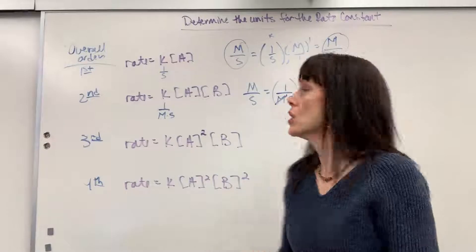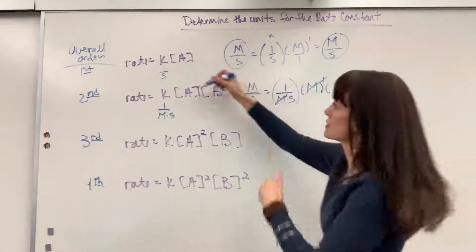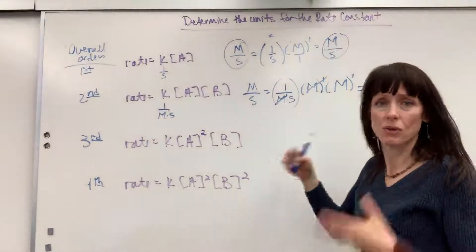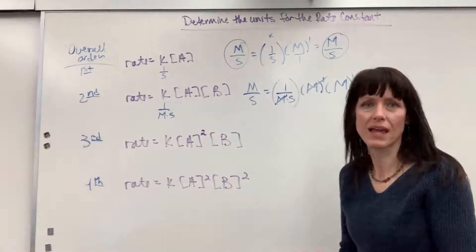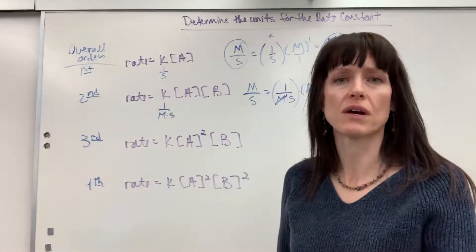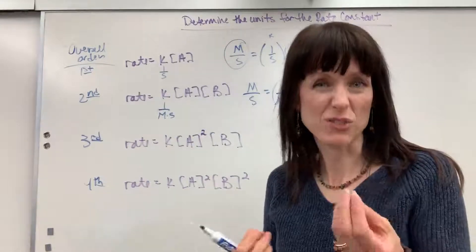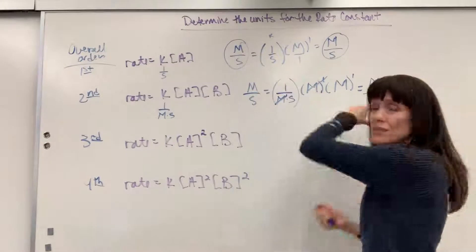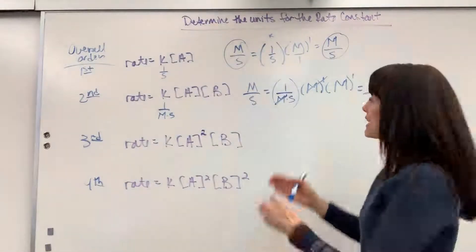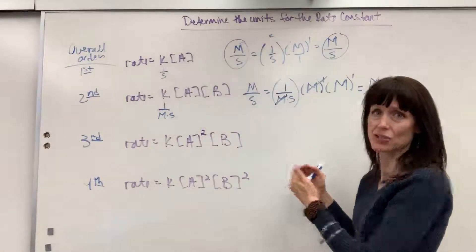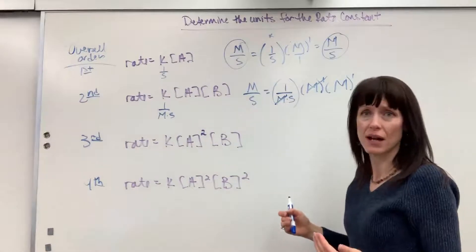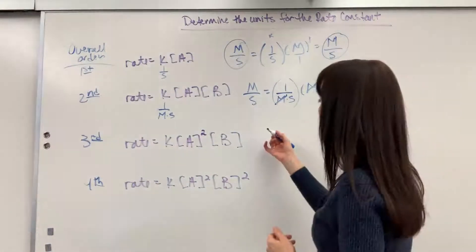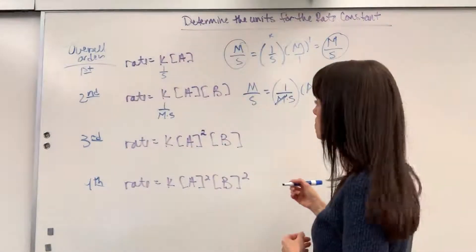Don't memorize these units — be able to figure them out. Calculate the K value if needed, but then take a moment to write out the units and derive the unit for K this way. I memorize as little as possible; I want to be able to figure things out. A little bit of practice and you can do this.